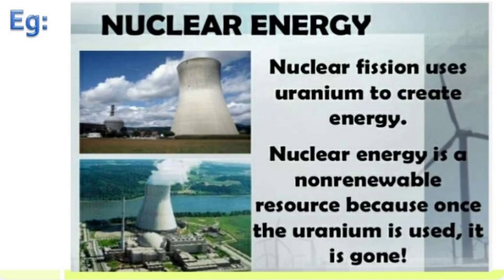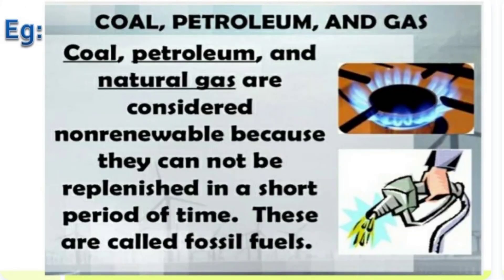One example of a non-renewable resource is nuclear energy. Nuclear fusion uses uranium to create energy. Nuclear energy is non-renewable because once the uranium is used, it is gone. Another example is coal, petroleum, and natural gas. Coal, petroleum, and natural gases are considered non-renewable because they cannot be replenished in a short period of time. These are called fossil fuels.